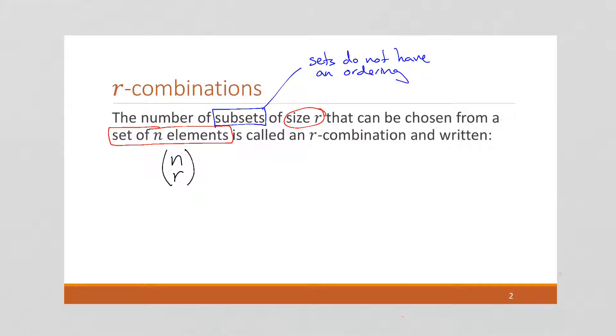So this is a little different. For permutations it was written P(n,r). This is an r-combination. And what's also interesting is how this is read. This is read n choose r.